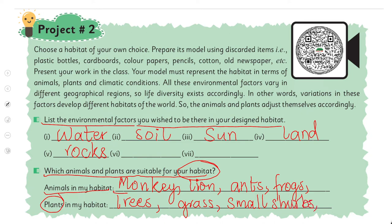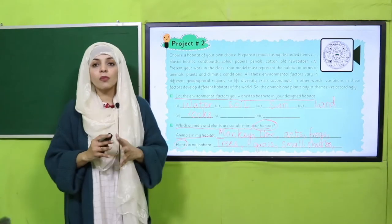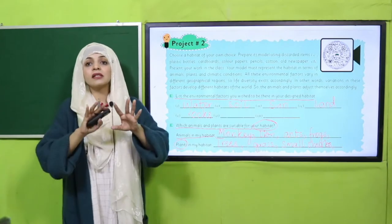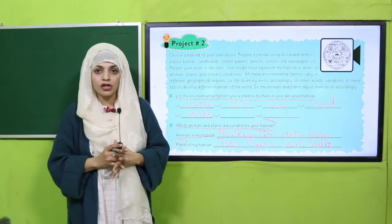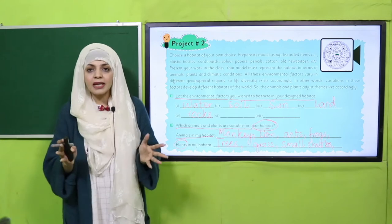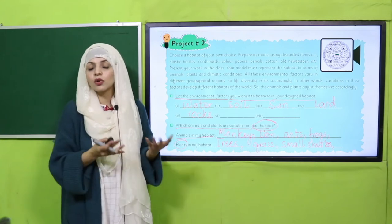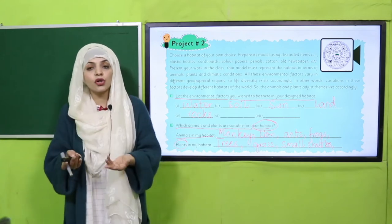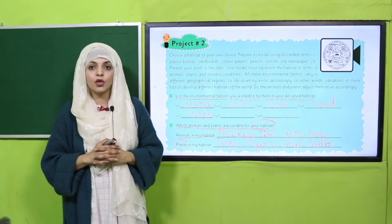Plants in my habitat: trees, grass, small shrubs - these types of plants grow in a forest habitat. My dear students, this is how you will complete your project. It is extremely easy - cooperate with your class fellows and with your teacher and complete your project. You will thoroughly enjoy this activity.